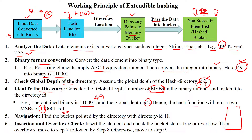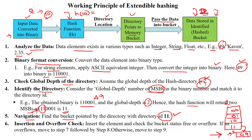So with global depth 2, the hash index is '11', and this points to the memory bucket. The memory bucket will store the value 49, where the local depth is less than or equal to the global depth. The directory index '11' navigates to identify the correct bucket where 49 has to be stored. When inserting 49, we check if the bucket is free — initially it is free, so 49 is inserted into that memory bucket.